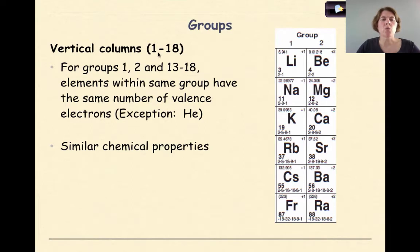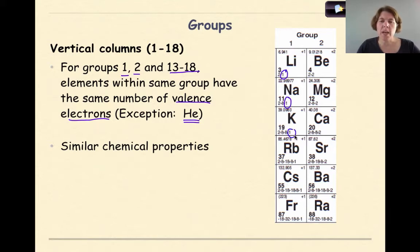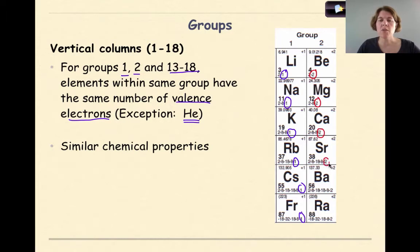Groups are the vertical columns 1 through 18 on your periodic table. For groups 1, 2, and 13 through 18, elements within the same group have the same number of valence electrons — with the exception of helium, since the maximum electrons in the first period is 2. Looking at group 1, every element from lithium to sodium to potassium, rubidium, cesium, and francium all have one valence electron. In group 2, all configurations end with 2 — beryllium, magnesium, calcium, strontium, barium, and radium each have 2 valence electrons.